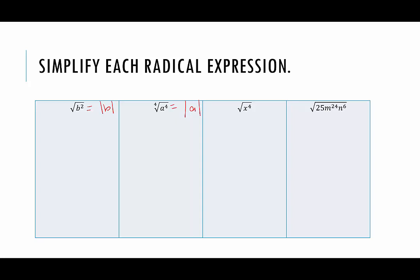In the next example, we have the square root of x to the fourth. We can rewrite x to the fourth as x squared, squared — so it is a perfect square. Now the question is: do we need to include the absolute value? If we take the square root of x squared squared, we end up with x squared. We don't need to put that inside an absolute value, because when you square something, it's going to turn it positive.